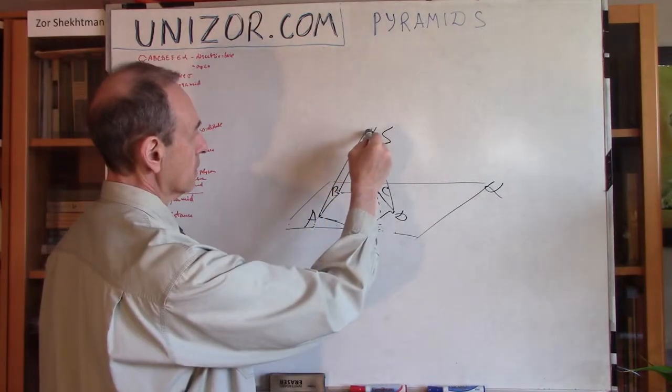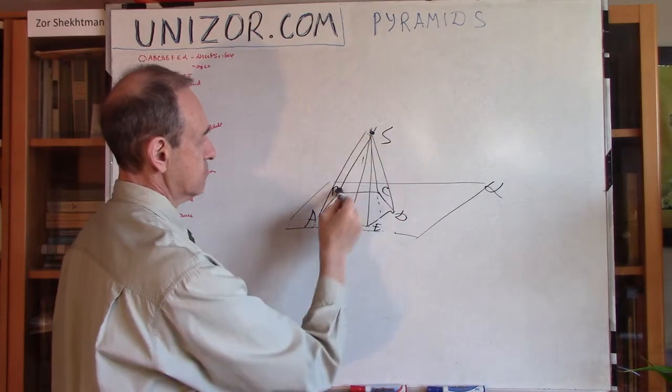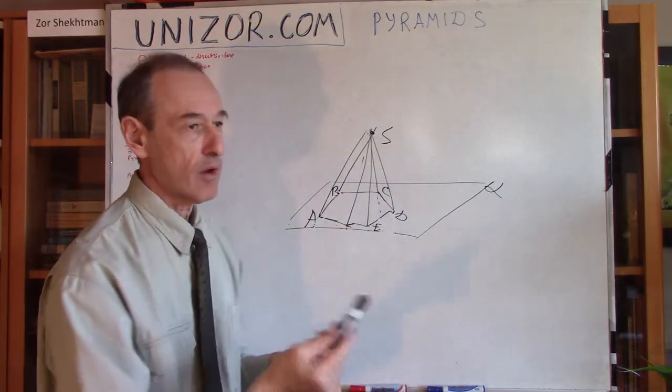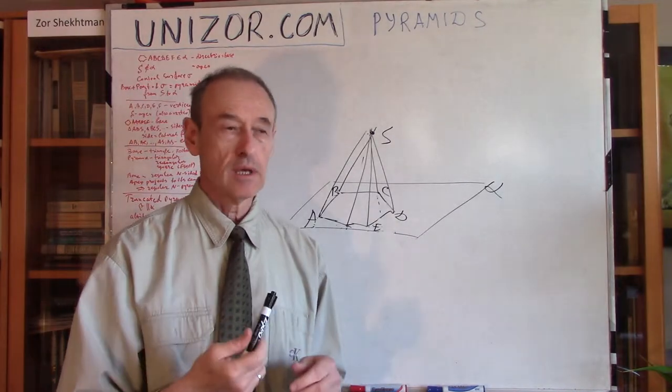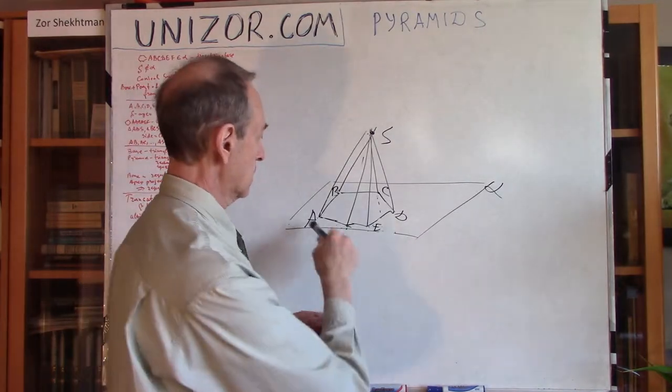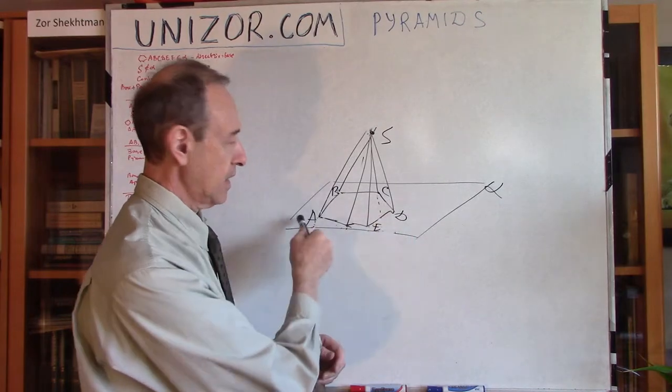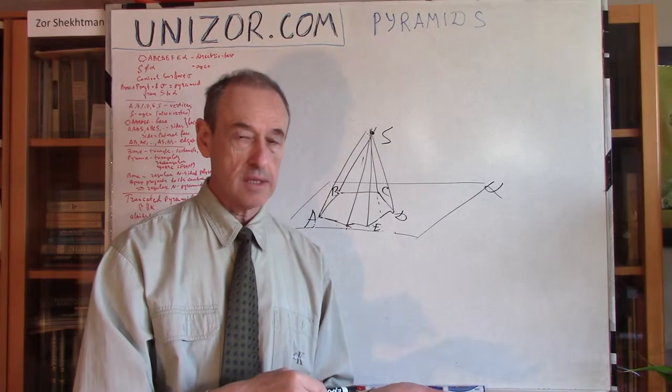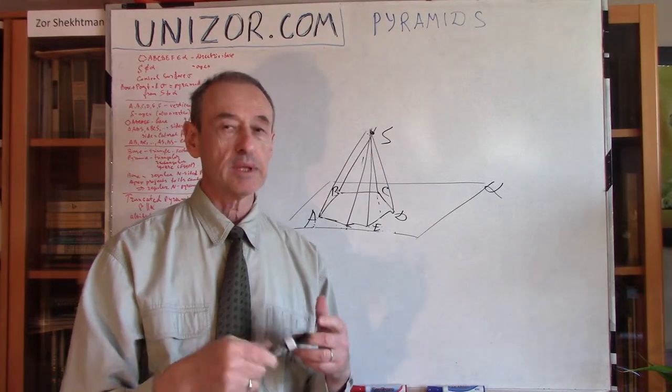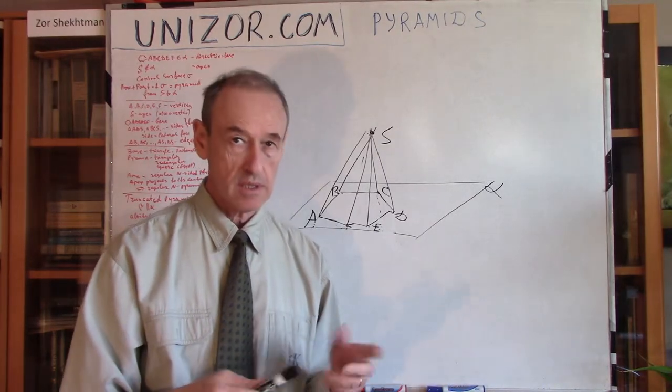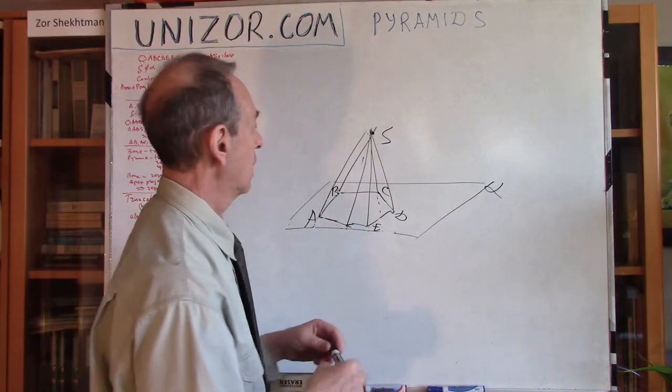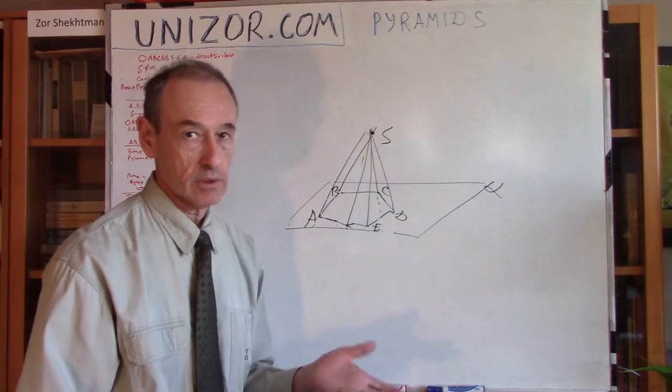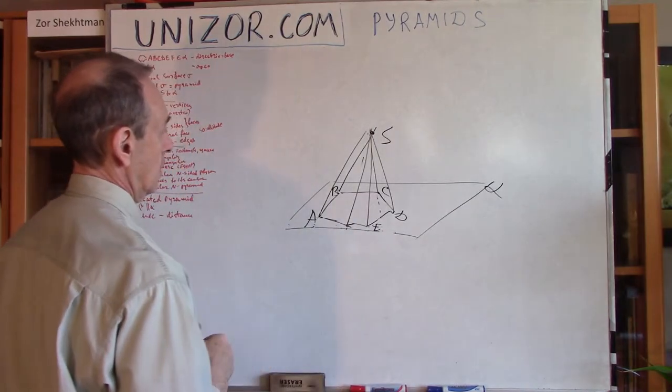Now, triangles, S, A, B, S, B, C, S, C, D, etc. These are all sides. And the polygon A, B, C, D, E, F is the base. Now, sides and base are commonly called faces of the pyramid. In particular, the side faces sometimes are called lateral faces.